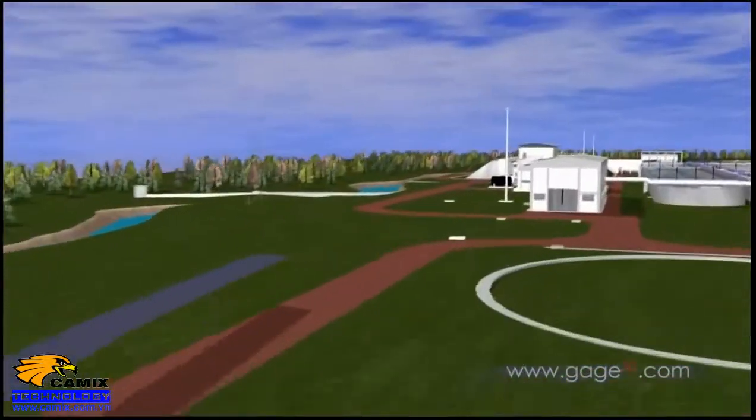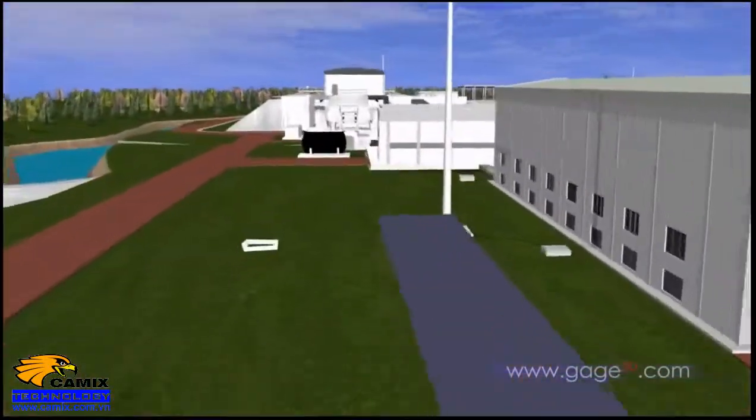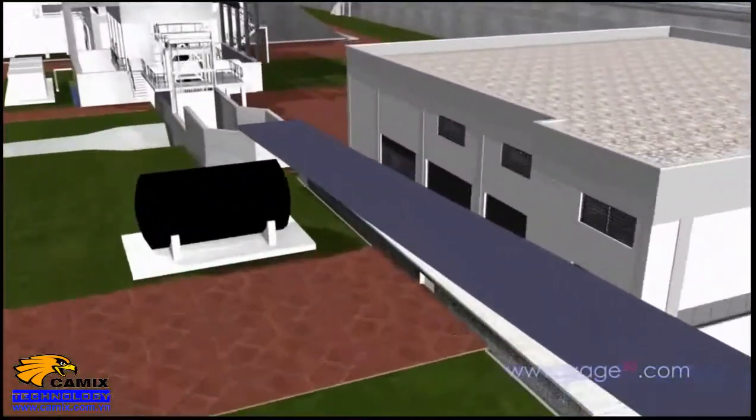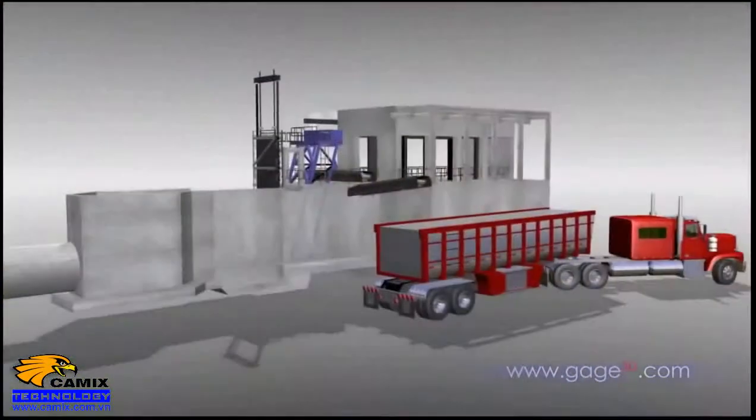Many older cities have combined sewers that convey both storm water and sewage. A large storm can overflow the sewer and greatly increase the volume of water reaching the plant.